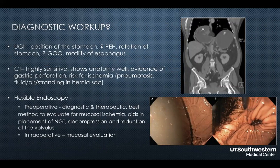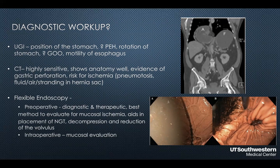If you're able to get the NG tube in and decompress the stomach and continue diagnostic workup — the CT scan, which is highly sensitive, shows your anatomy well, and shows evidence of gastric perforation or gastric ischemia with pneumatosis, fluid, air, or stranding in the hernia sac. An upper GI is quite helpful once you stabilize the patient, as it can tell you if there's gastric outlet obstruction and whether contrast passes into the duodenum, giving you time to decide the most appropriate approach. It also provides information on esophageal motility. Flexible endoscopy can be highly valuable both preoperatively and intraoperatively — both diagnostic and therapeutic.